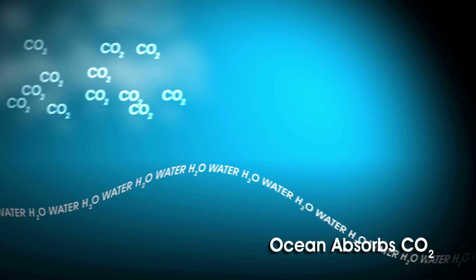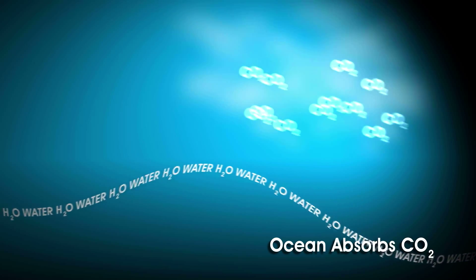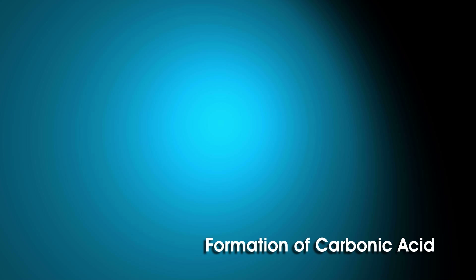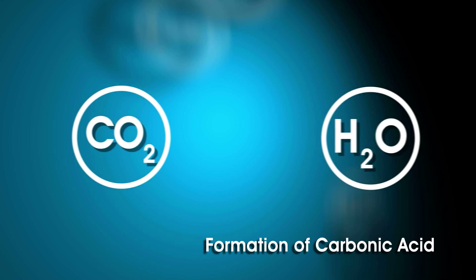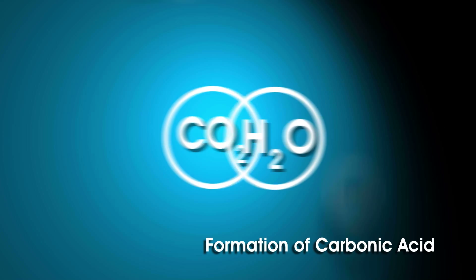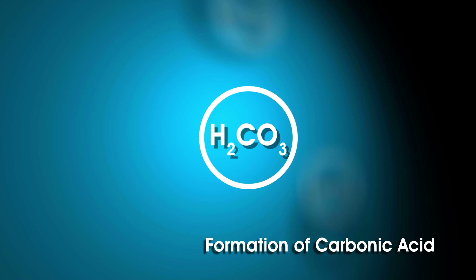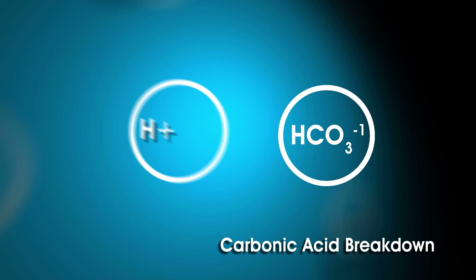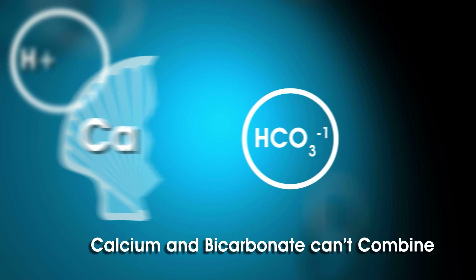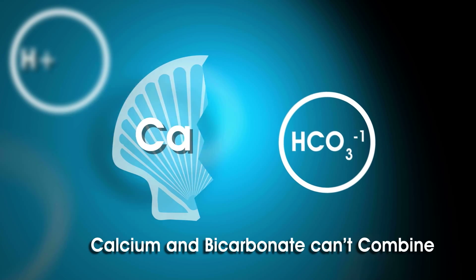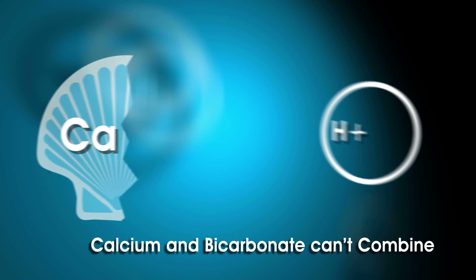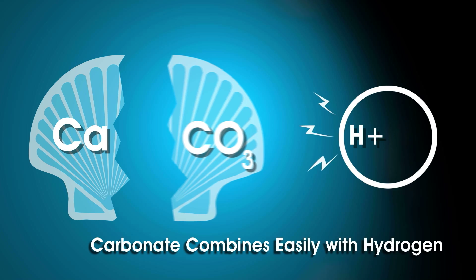Carbon dioxide mixes into the air, and a lot of it is absorbed into the ocean. In the ocean, carbon dioxide combines with water to form carbonic acid. Carbonic acid breaks down easily into bicarbonate molecules and hydrogen ions. Calcium and bicarbonate cannot bind together to form shells. Carbonate that could combine with calcium to make shells binds more easily with the hydrogen ions like those formed during the breakdown of carbonic acid.